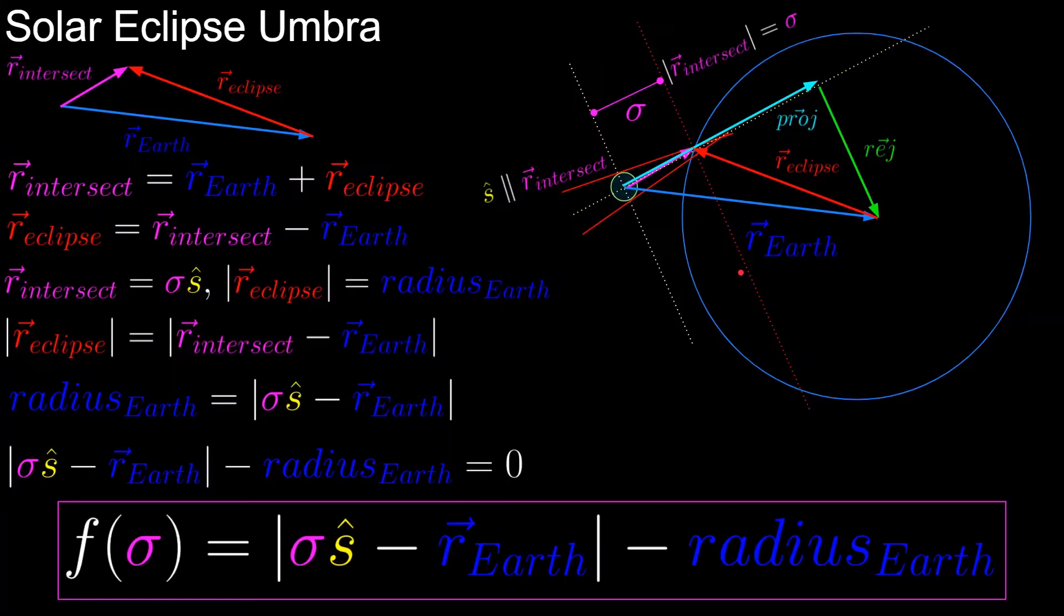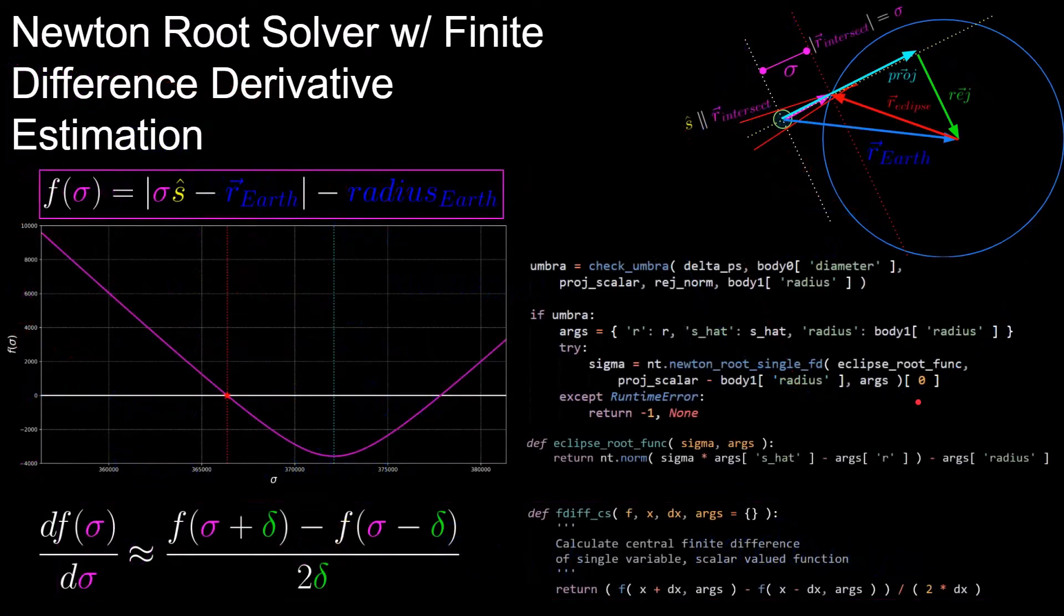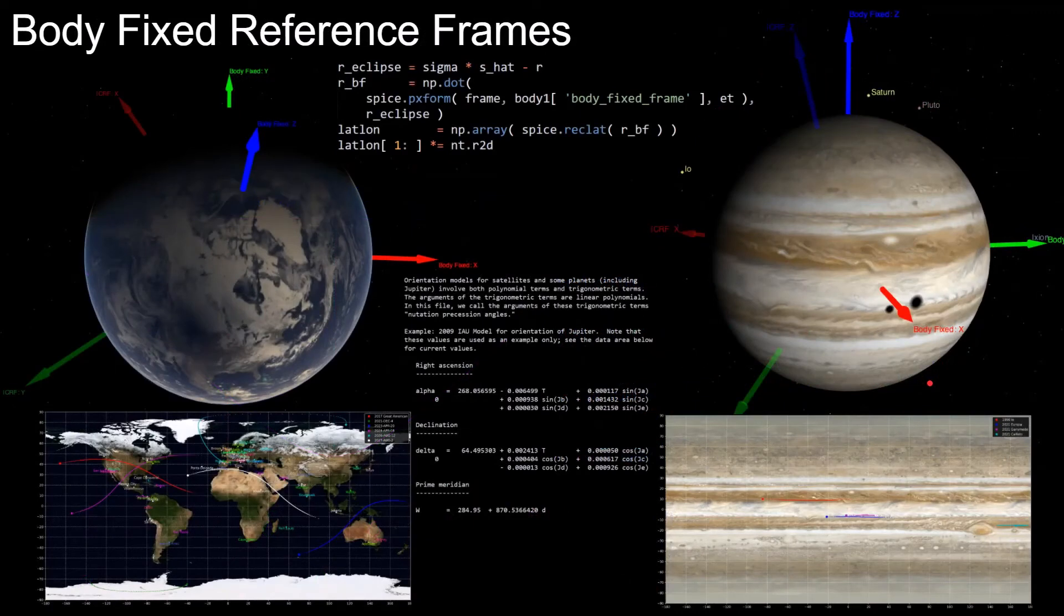This video is building from the previous video and will go over more geometry since we are now assuming the eclipse body to be a sphere instead of a point mass. It will also go over a root solver method with finite difference derivative estimation and frame transformations between inertial and planetary body fixed reference frames.